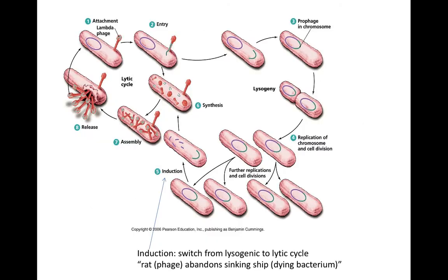Here is the diagram. This is the lysogenic cycle, with our prophage inserted in the bacterial chromosome. And here is induction — there's been some kind of DNA damage and we're switching from the lysogenic cycle back to the lytic cycle. So here we can see the prophage has cut itself out of the bacterial chromosome. We have all the steps leading to degradation of the bacterial chromosome. We have phage DNA copied, phage proteins made, here we have assembly, and then lysis with release of the newly replicated phage. So again, in induction, we're switching from the lysogenic cycle to the lytic cycle.